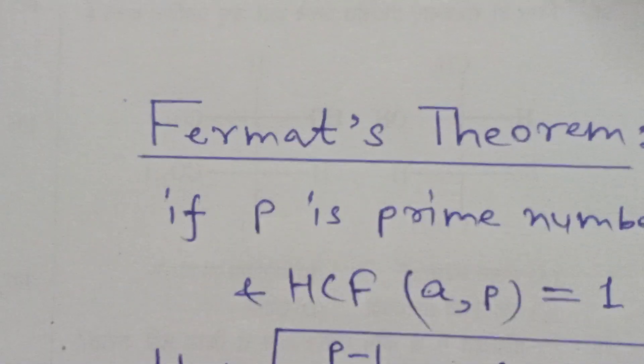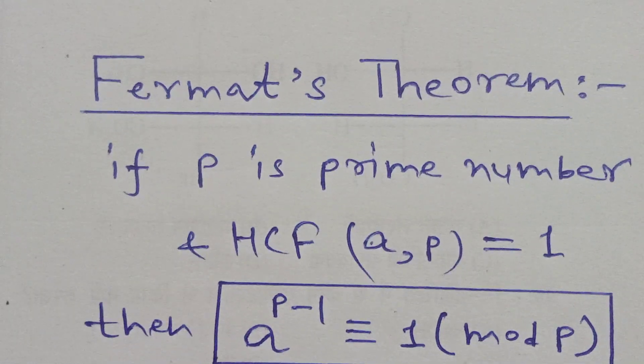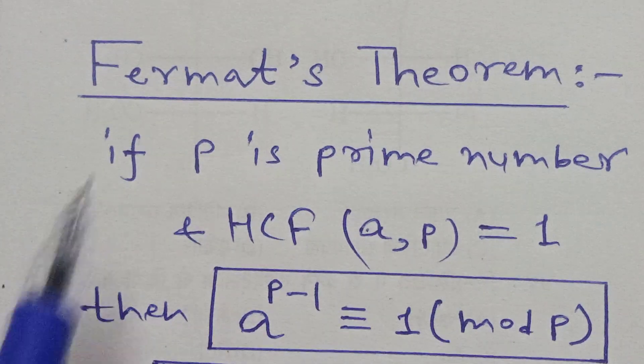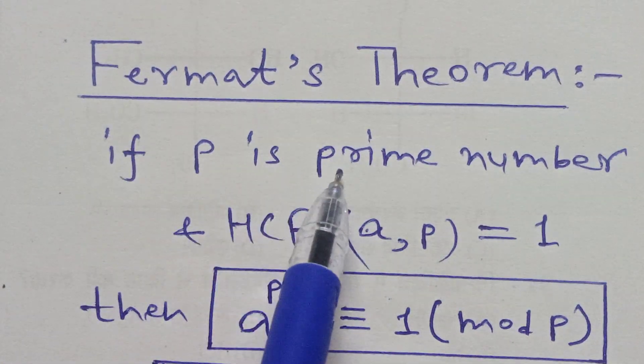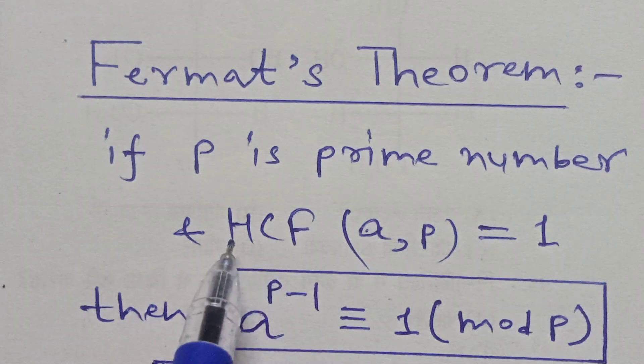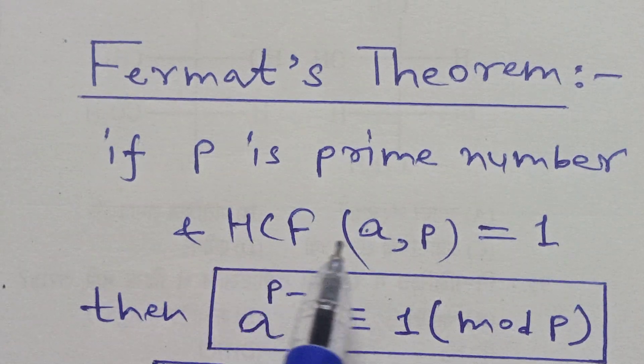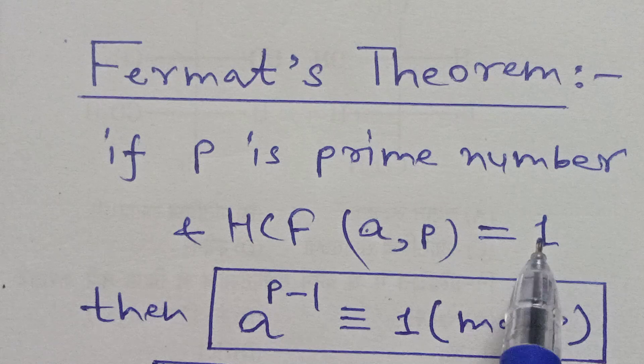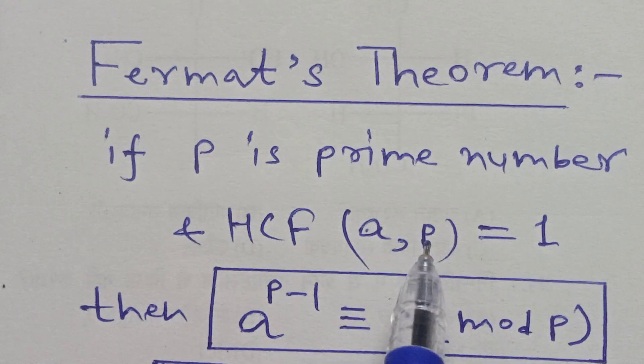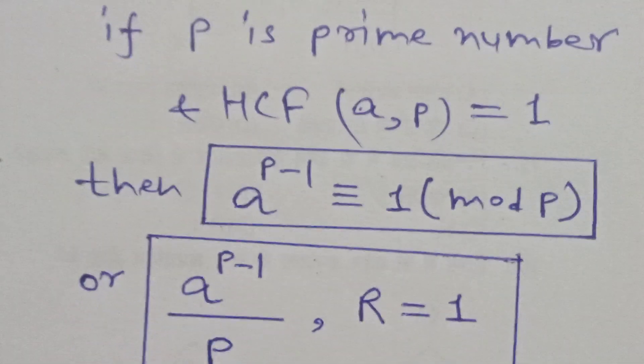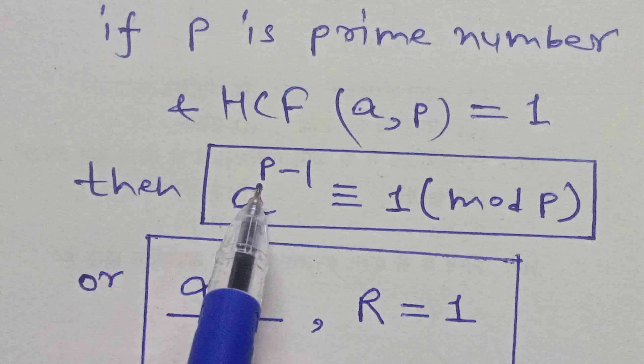If p is a prime number and highest common factor HCF of a and p is 1, it means a and p are co-prime, then a to the power p minus 1 is equal to 1 modulo p.